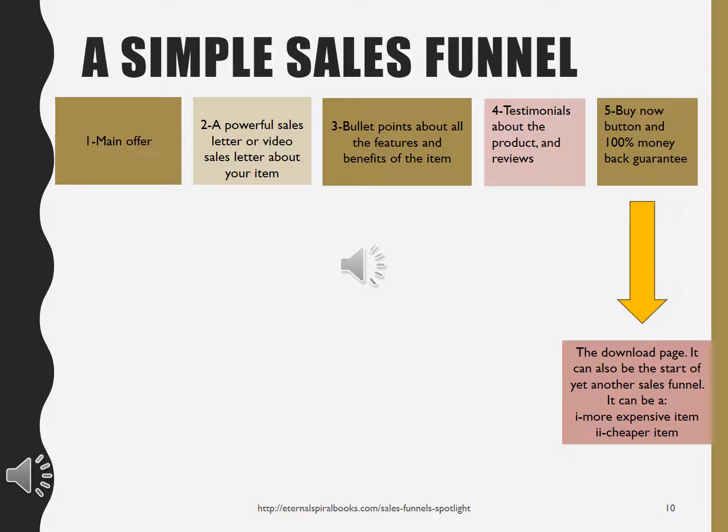Once they get to the download page or the thank-you-for-your-order page, this can also be the start of yet another sales funnel. The next item can either be a more expensive item — usually referred to as an upsell — or a cheaper item, usually referred to as a downsell.